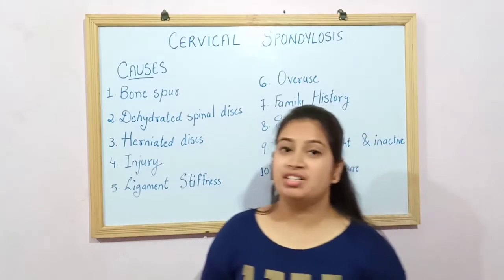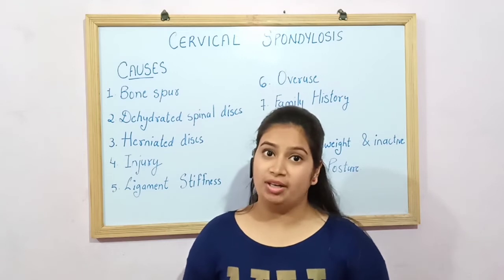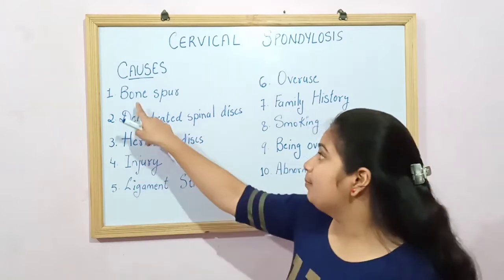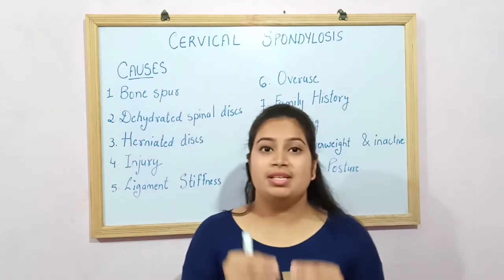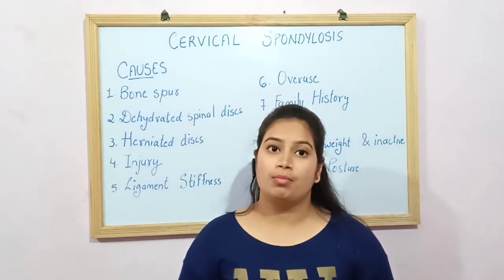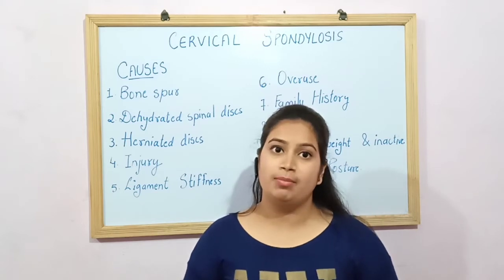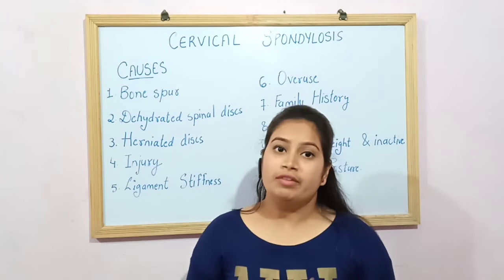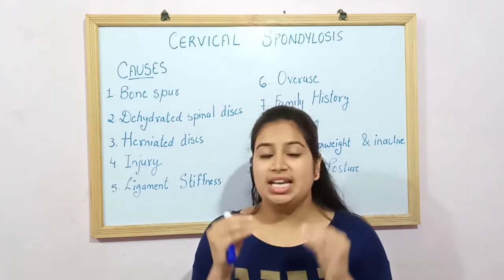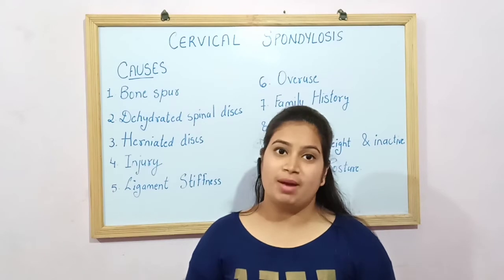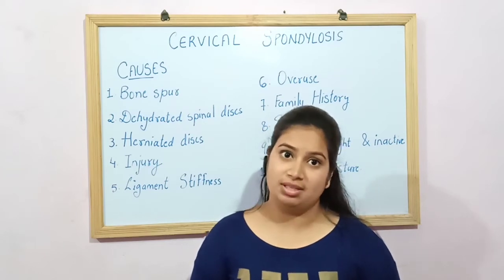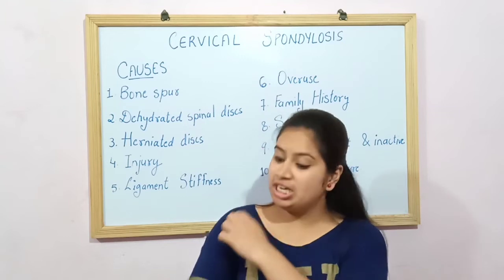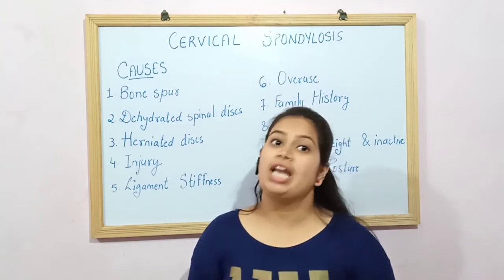Now moving on to the causes of cervical spondylosis. The first cause is bone spurs — bony outgrowths over the vertebral body, also called extra bone growth on the bone. These can compress the delicate structures of your cervical spine and cause symptoms like pain in the neck radiating down to the arm, with tingling and numbness.